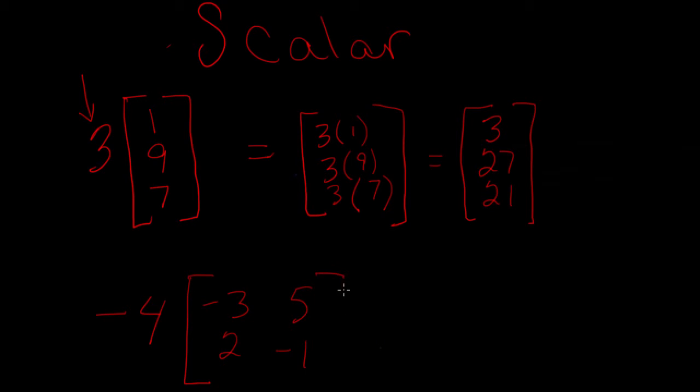You're still going to multiply each number in the matrix, each entry, each element. Remember these are called entries, or you can also call them elements, by that scalar.